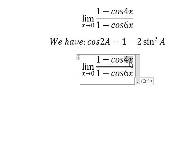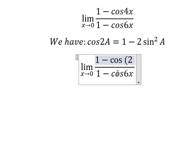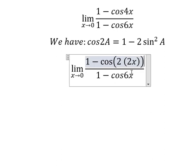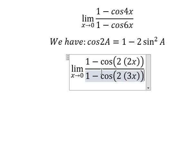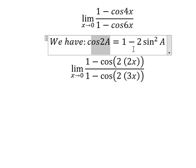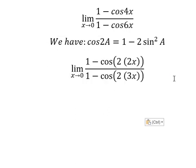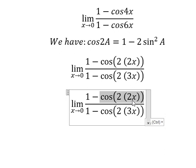And we know that 4x, that is about 2 multiplied by 2x. This one, that is about 2 multiplied by 3x. So we need to transform this one into this one and we have like this.